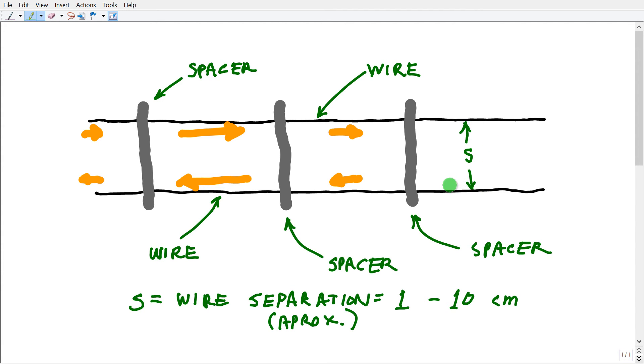therefore, these two radiated or received RF fields, radiated or picked up by these wires, they cancel out because the spacing is only a tiny fraction of a wavelength, and that's important. This wire separation,